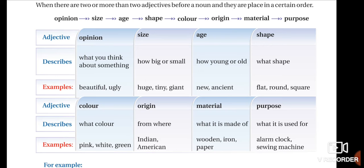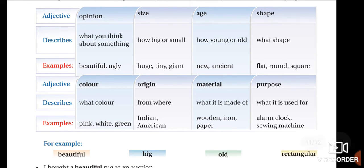Next is age — how young or how old the noun is. For example: new, ancient, old. Then shape — what shape the noun is. For example: flat, round, square, oval. After that, color — what color the noun is: pink, white, green. And then origin — from where it comes from or where you got it. For example: Indian, American.